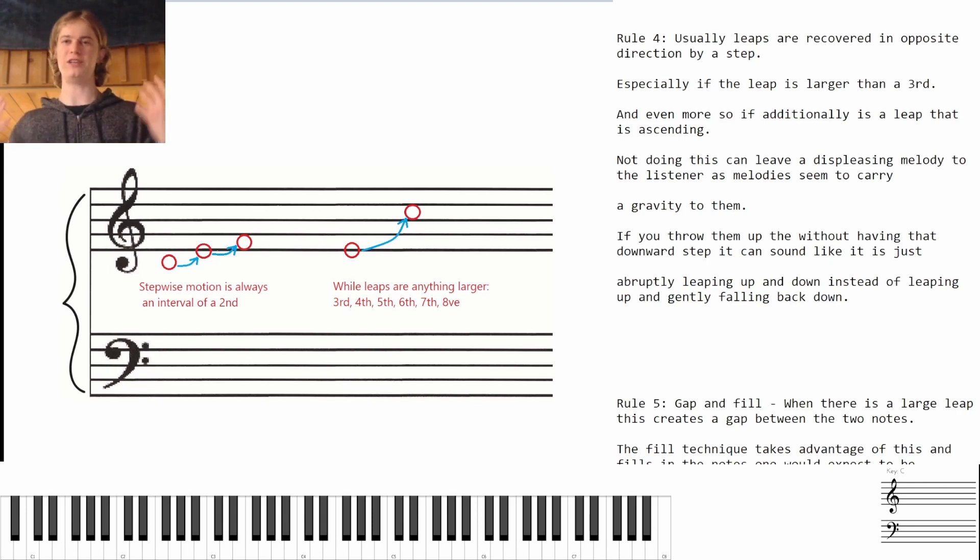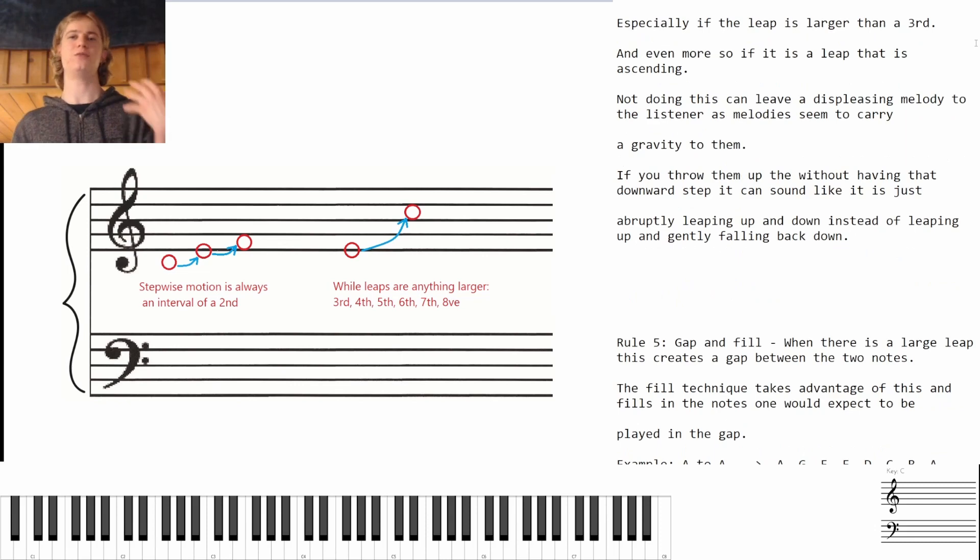Rule number four: usually leaps are recovered in the opposite direction by a step. So if it leaps up, normally you're going to have one step down, or if it leaps down, you're going to have one step going up. This is especially true if the leap is larger than a third and even more so if it is a leap that is ascending. Not doing this can leave a displeasing melody to the listener as melodies seem to carry a gravity to them.